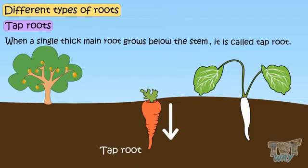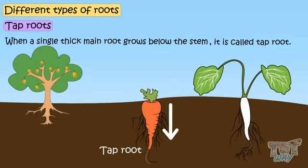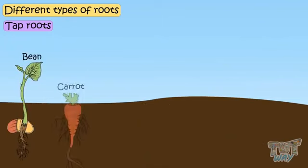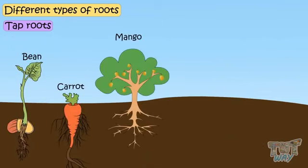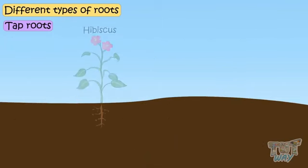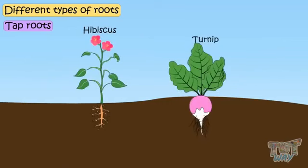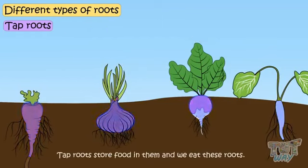Many thin roots, which are unequal in size, grow from this main root. Beans, carrots, mango, radish, rose, hibiscus and turnips are the plants that have tap roots. Tap roots store food in them and we eat these roots.